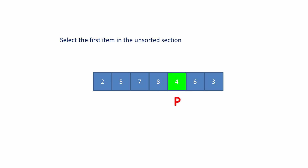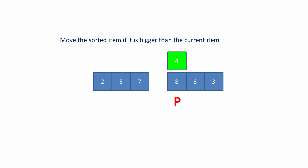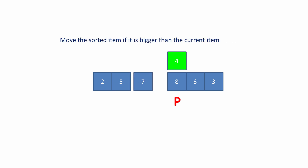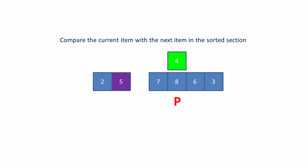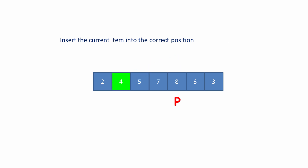Select the first item in the unsorted section — this is the new current item. Compare the current item with the first item in the sorted section. Move the sorted item if it's bigger than the current item. Notice how we're scanning the sorted section of the list from right to left. Compare the current item with the next item in the sorted section. Move the sorted item if it's bigger than the current item. Again, compare the current item with the next item in the sorted section and move the sorted item if it's bigger than the current item. Compare the current item with the next item in the sorted section — there's no need to move the two because it's smaller than the current item. So insert the current item into the correct position.